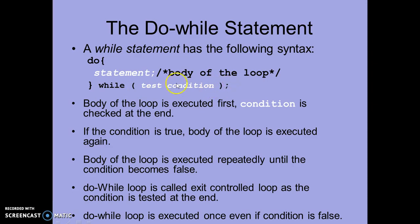In do-while we use a semicolon to terminate the statement, whereas in a while loop we don't use a semicolon. This is one basic difference between while and do-while.